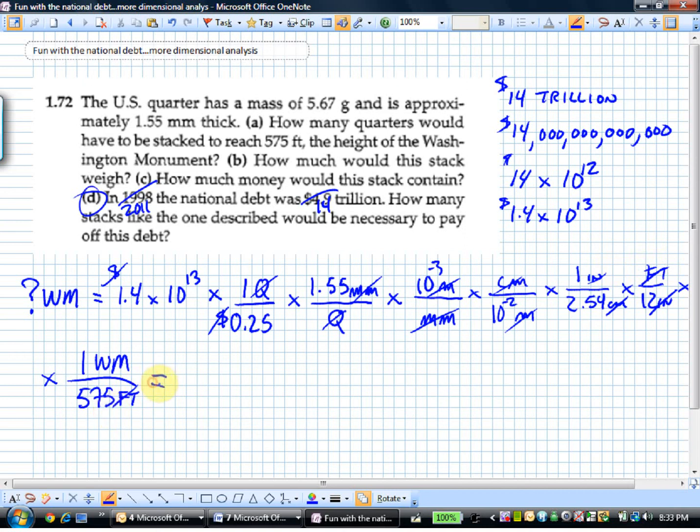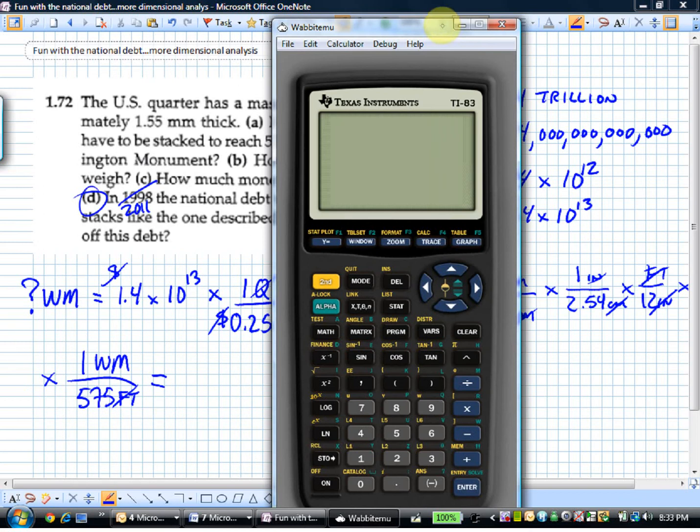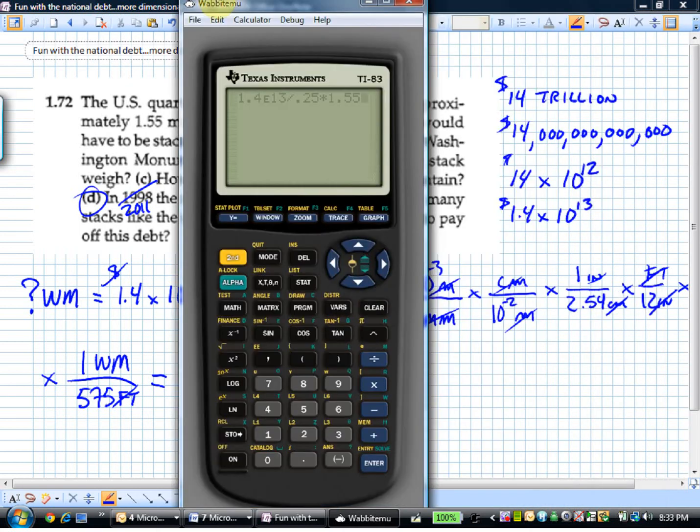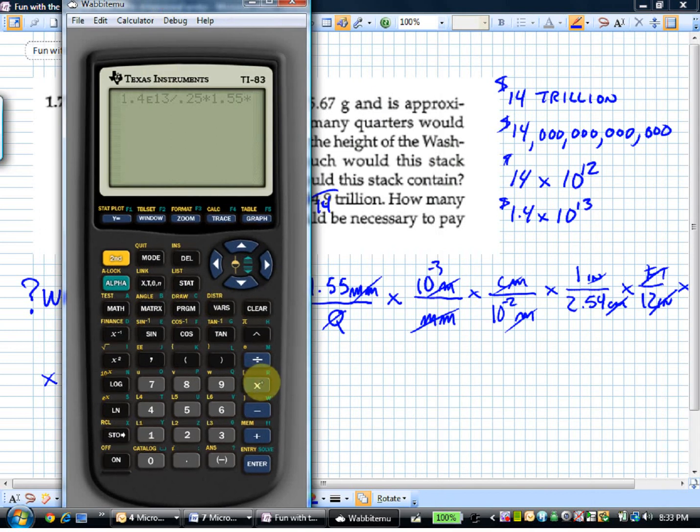Now it's time to do the calculation. We'll pull up the calculator, turn it on and clear everything. Start at 1.4, we're going to need some scientific notation here, e to the 13th. We're going to divide that by 0.25, multiply that by 1.55.